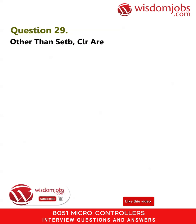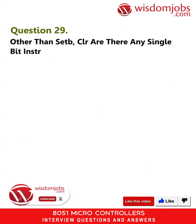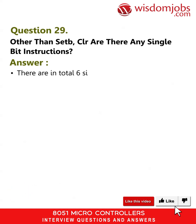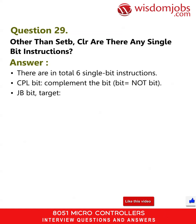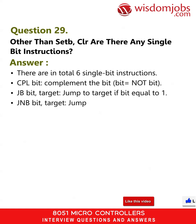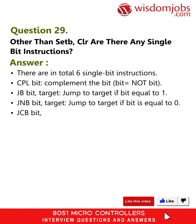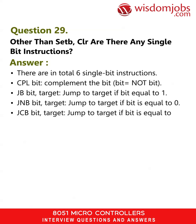Question 29: Other than SETB and CLR, are there any single bit instructions? Answer: There are in total six single bit instructions: CPL bit (complement the bit, bit = NOT bit); JB bit, target (jump to target if bit equals 1); JNB bit, target (jump to target if bit equals 0); JCB bit, target (jump to target if bit equals 1 and then clear bit).